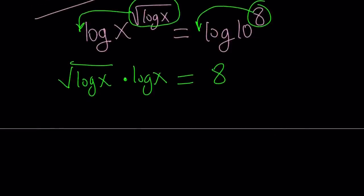Great, so now we have something that should be familiar on the left-hand side. Something multiplied by its square root. So I can write this as log x to the power 3 halves, because square root of log x can be written as log x to the power 1 half. And 1 plus 1 half is equal to 3 halves. And this is equal to 8.